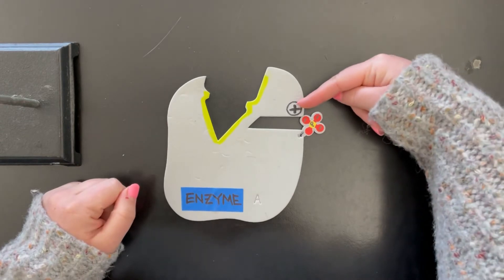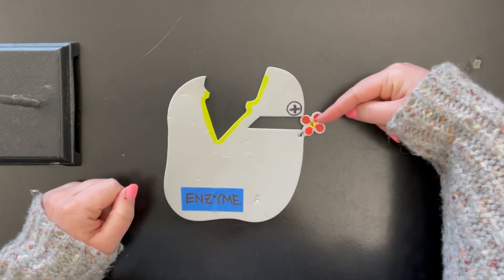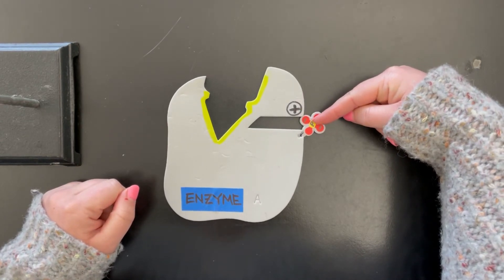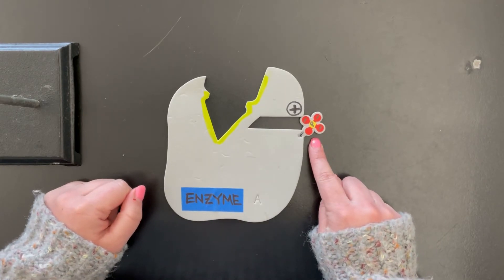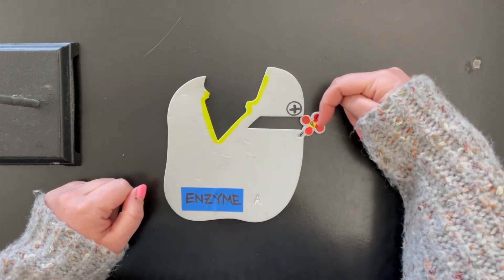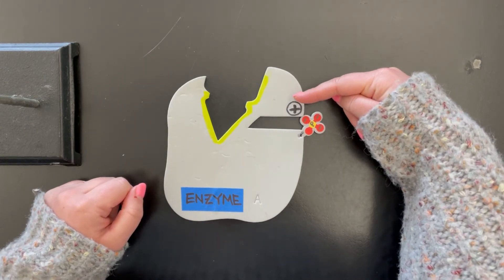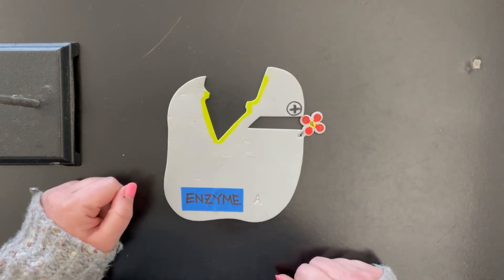So now we can see we have this positive charge and this negative charge are attracted to each other. Remember, this negative charge came from the phosphate. So because we have this new negative charge, now we can form a new ionic bond. And so this has changed the shape of the enzyme.